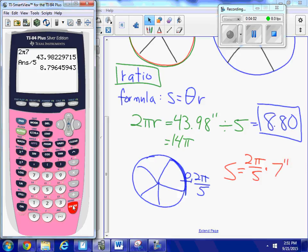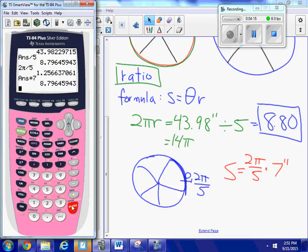I'm going to go 2π divided by 5 times 7, and I get the exact same answer, 8.80. So either using the formula or a more common sense ratio approach, either one will give you the correct answer.